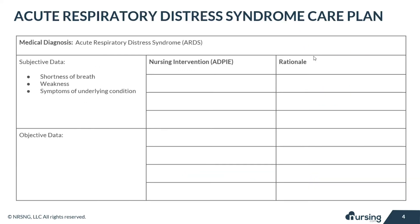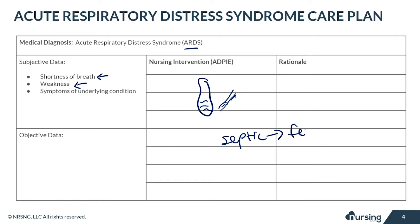Starting with the subjective data, the patient with ARDS is going to be experiencing shortness of breath and weakness. The fluid surrounding or filling the alveoli prevents the lungs from properly oxygenating the blood, causing these symptoms. The patient may also have symptoms of the underlying condition — for example, if the patient is septic, they're probably going to have fevers.